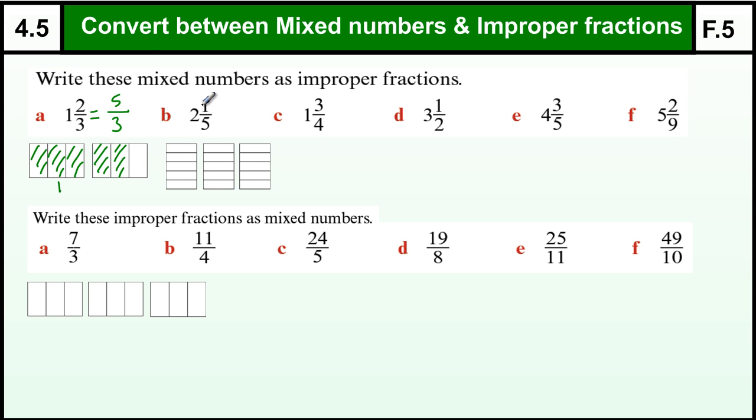OK, another example: if I have 2 and 1/5, I have got this whole block covered in, that is 1, and then another one which is 2, and then 1 of these fifths colored in. Then I have got 1, 2, 3, 4, 5 fifths, 6, 7, 8, 9, 10 fifths, and 1 extra one will make 11/5.